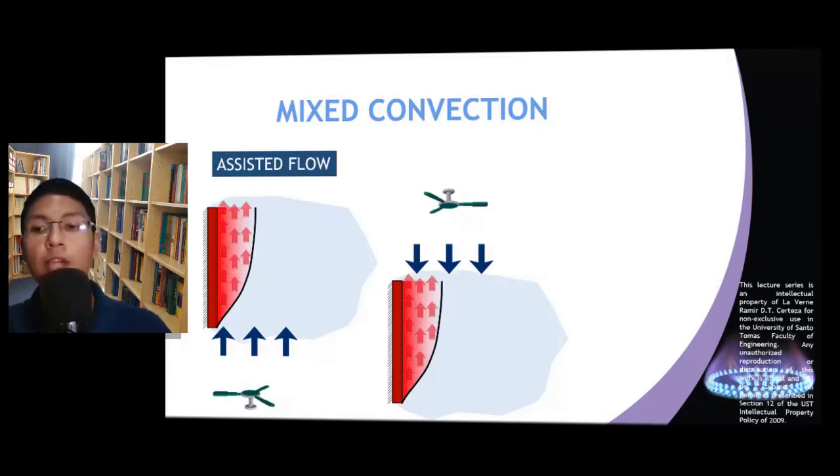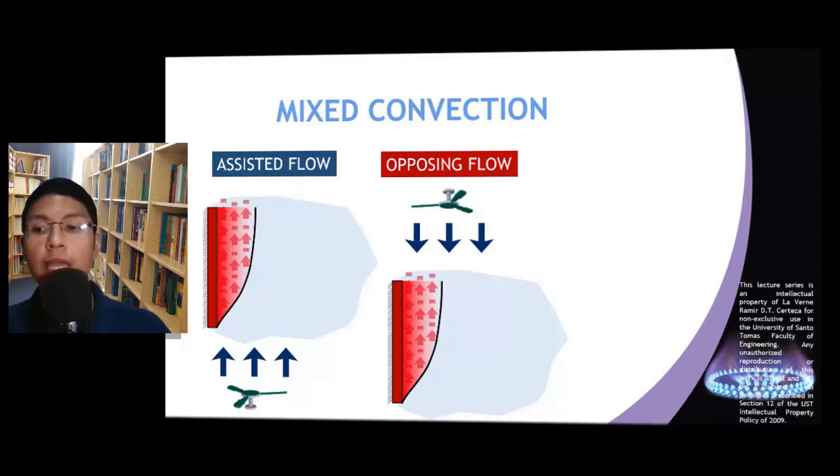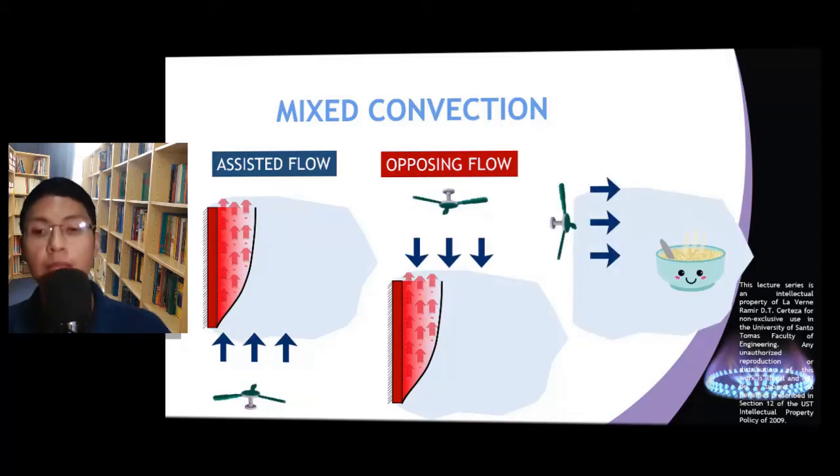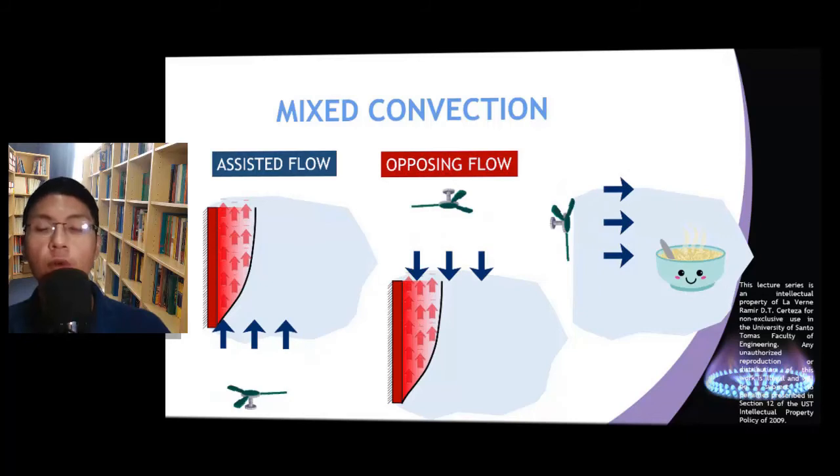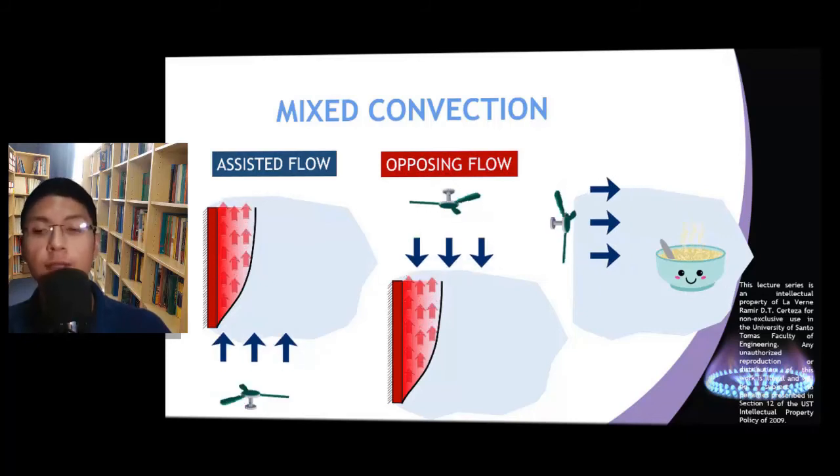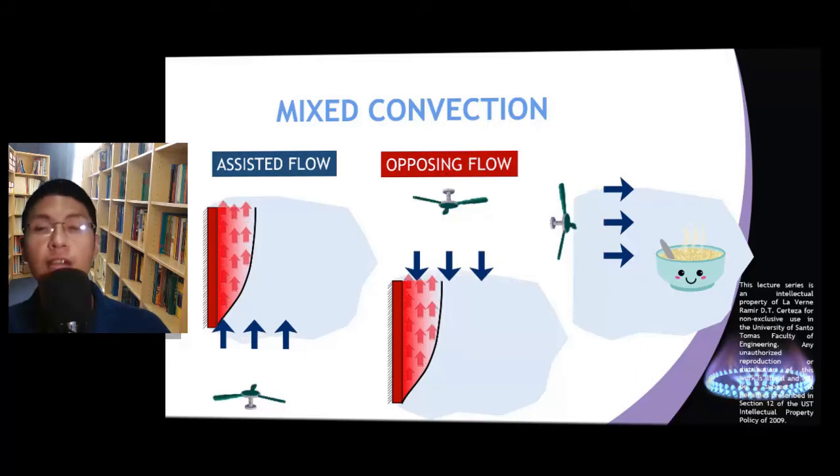Finally, when the direction of fluid motion due to the application of an external forcing mechanism is perpendicular to the direction of fluid flow due to the buoyant force, then we call this type of mixed convection as transverse flow.